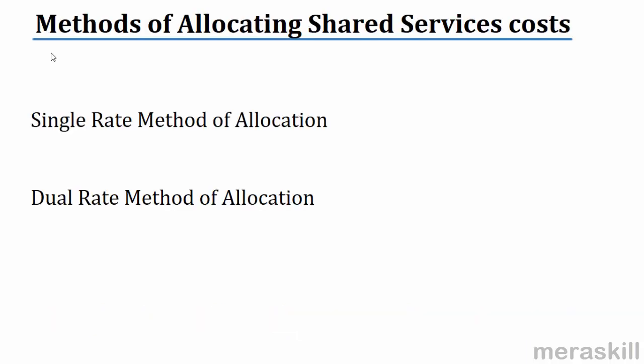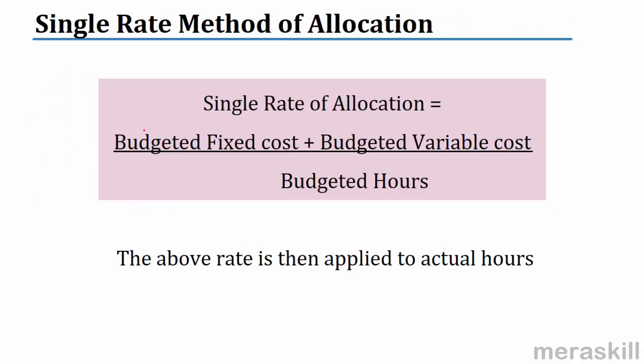Now, the methods of allocating shared services costs. Whenever you have a common cost and you are allocating it to certain departments, what method would you use? Would you use a single rate method of allocation or a dual rate method? Single rate means you have one rate which includes the fixed cost and the variable cost elements, while dual rate means you have one separate rate for fixed cost and a separate rate for variable cost. Let's look at it in detail with an example.